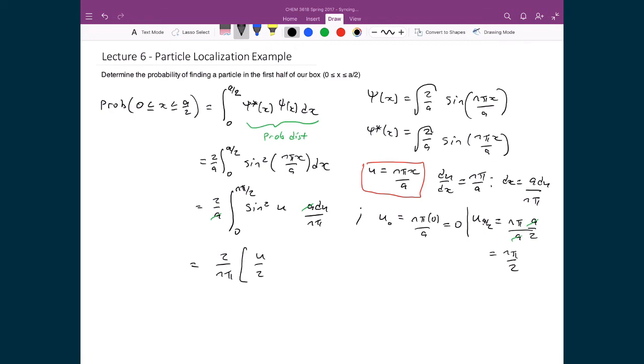I know this integral is going to be u over 2 minus the sine of 2u over 4. Bounds of my integral are between 0 and n pi over 2. I'm going to substitute in directly for those values. I'm going to get n pi over 4, minus the sine of 2n pi over 2 all over 4. From that I'm going to subtract off 0 and the sine of 0 all over 4.